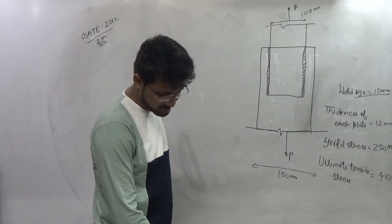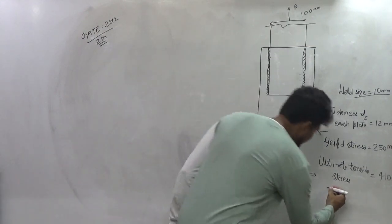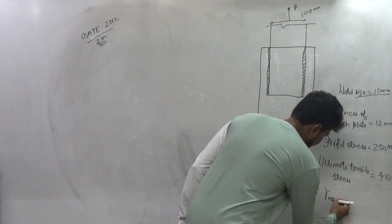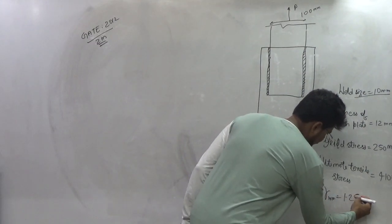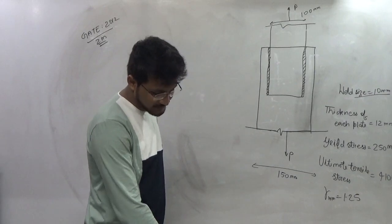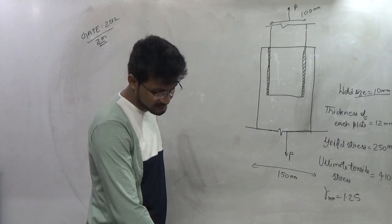The welding is done in the workshop and gamma mm is given as 1.25. As per the limit state method of IS 800-2007,